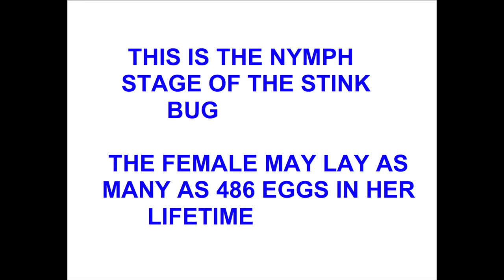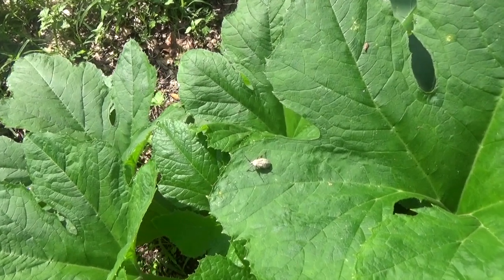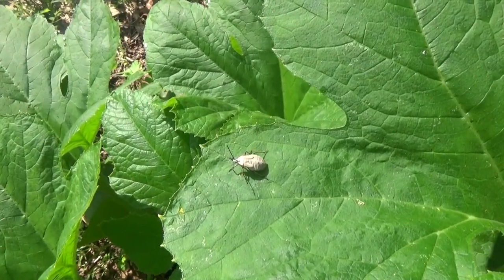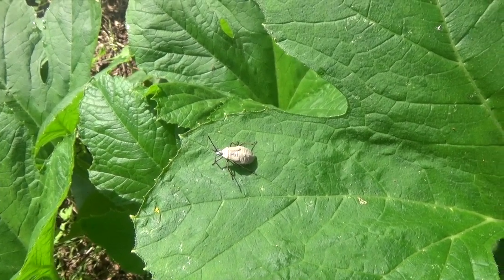You can tell the nymph stage because they kind of look white or maybe a gray color, and they won't look like the elongated stink bug you see as the adult. That little white insect is the nymph stage of the stink bug — it's either white or gray and has a very soft body. This is the right time to kill them.